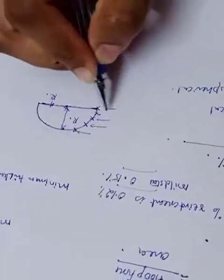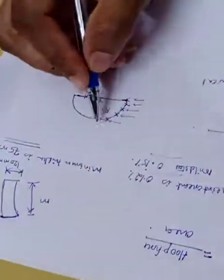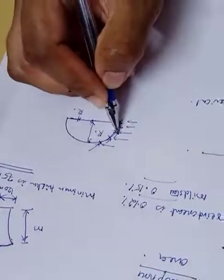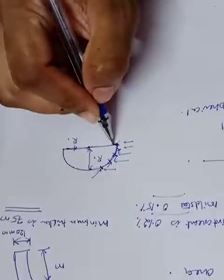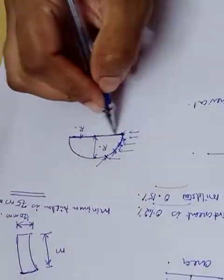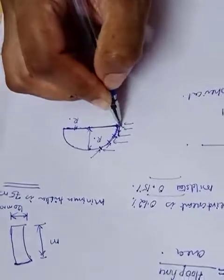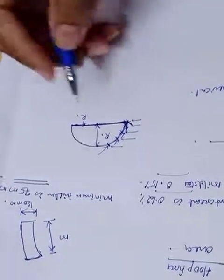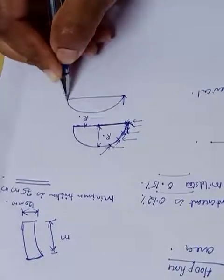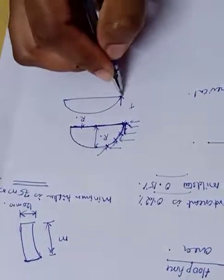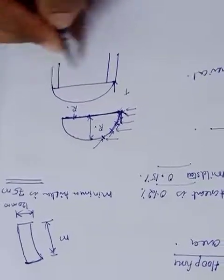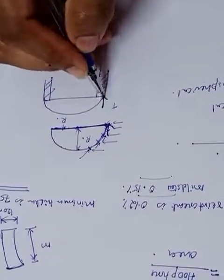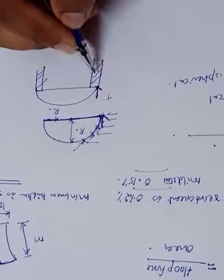Since this is hemispherical, the thrust will be acting perpendicular to this line. If you are considering this as a support, the meridional thrust will be acting perpendicular, so the hoop transfer will be coming directly to the support. Therefore, there are no issues.